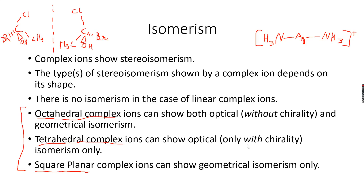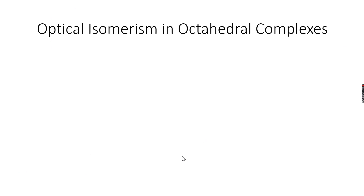Octahedral complexes can show geometrical isomerism only — but let's move further. Octahedral complexes can show both geometrical and optical isomerism. For octahedral complexes to show optical isomerism, they must have at least two bidentate ligands attached to them.